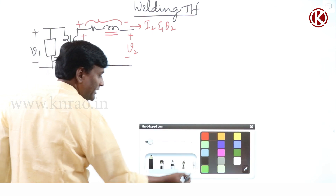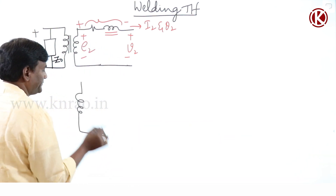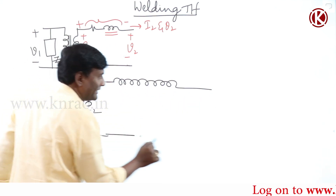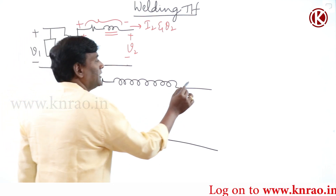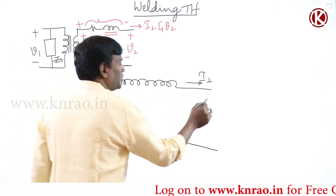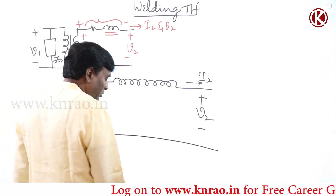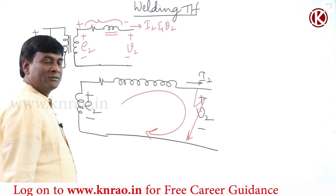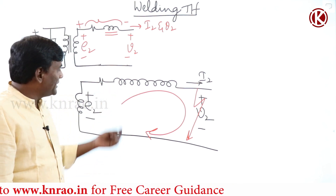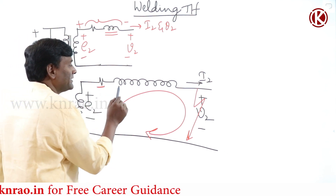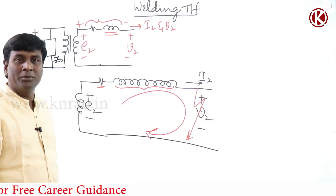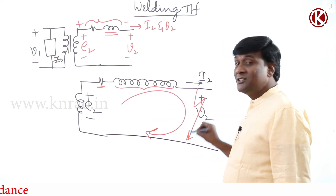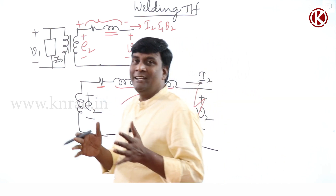Consider the secondary circuit: e2 with resistance and leakage reactance. When i2 is zero, e2 equals v2. Even if a short circuit occurs, the short circuit current is e2 divided by z, which will be limited if z is high. Impedance can be increased by raising resistance or leakage. Increasing resistance makes it lossy, but increasing leakage is lossless. So by increasing leakage, steady short circuit currents can be reduced.